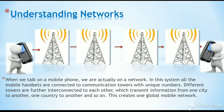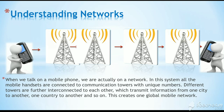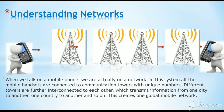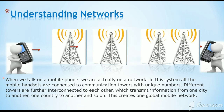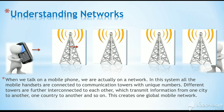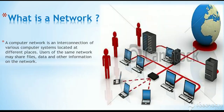When we talk on a mobile phone, we are actually on a network. In this system, all the mobile handsets are connected to communication towers with unique numbers. Different towers are further interconnected to each other, which transmit information from one city to another city, one country to another and so on. This creates one global mobile network.